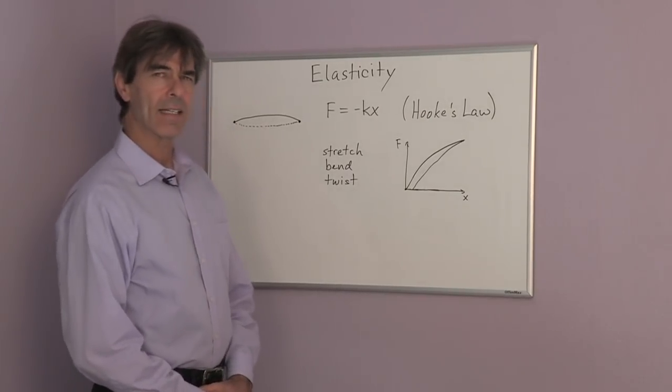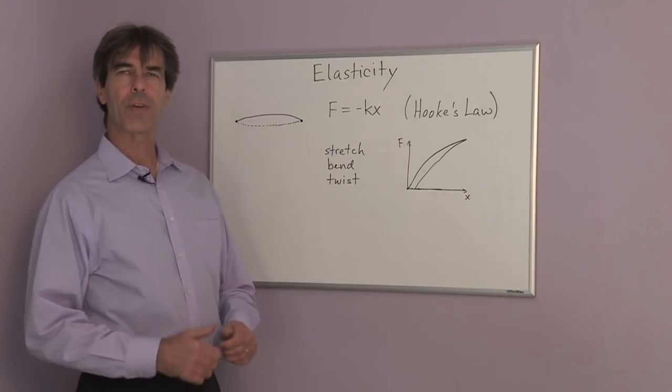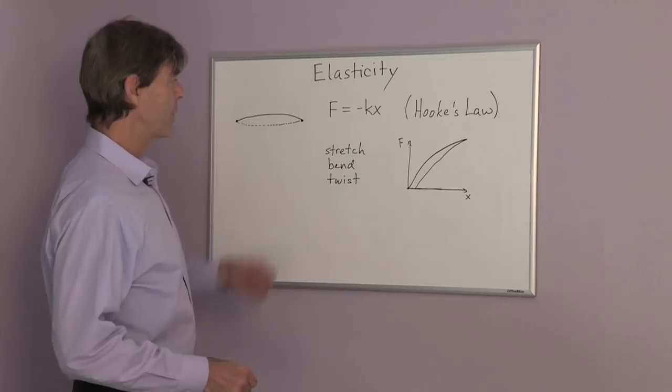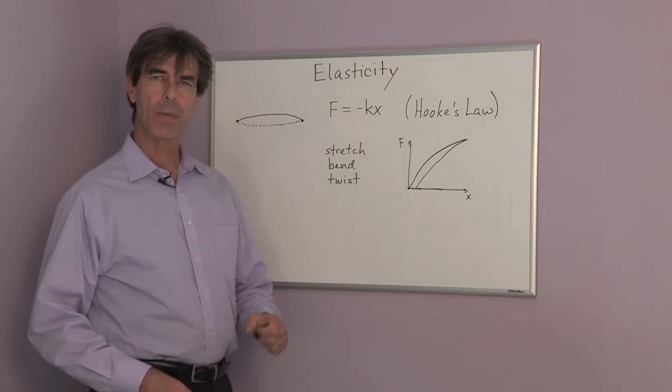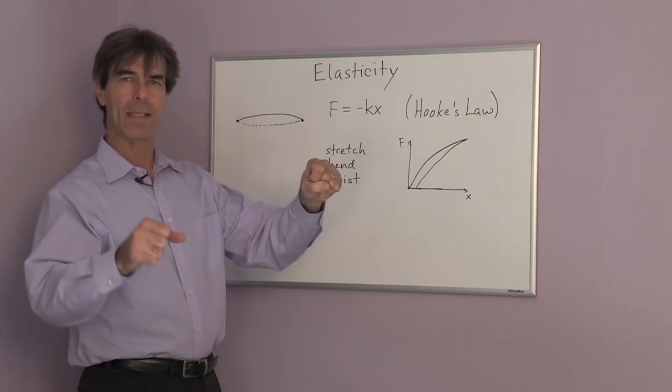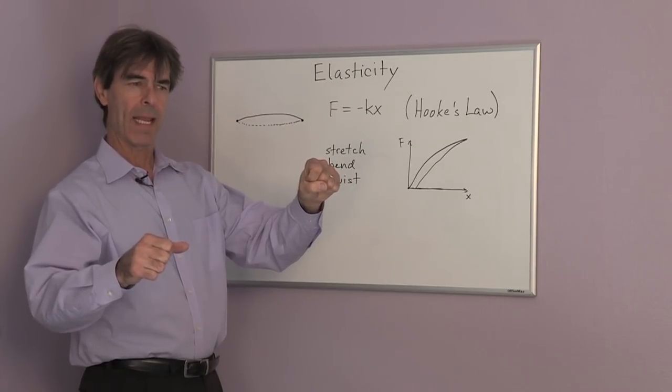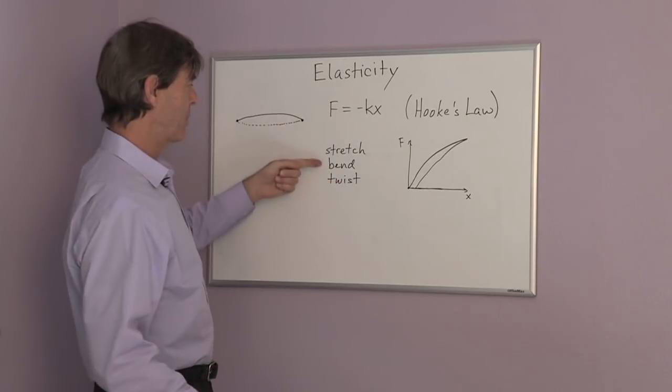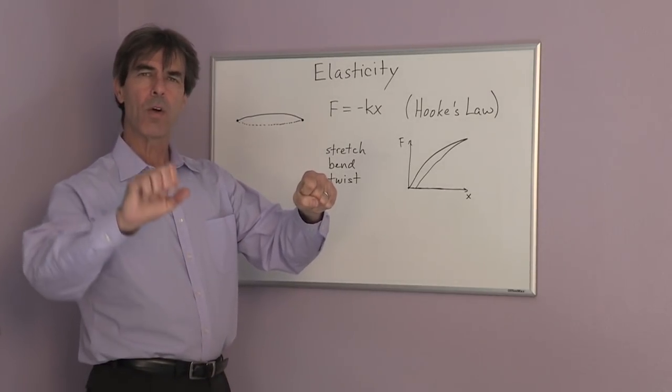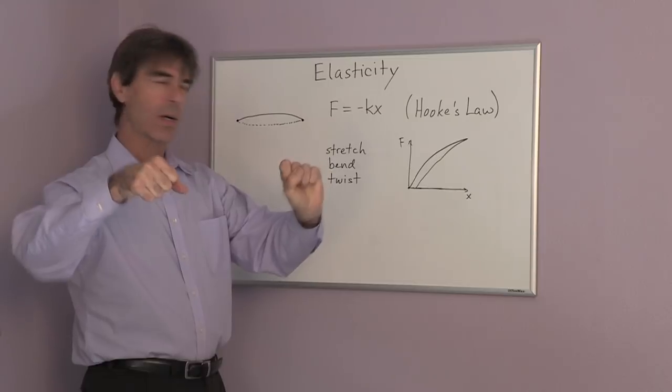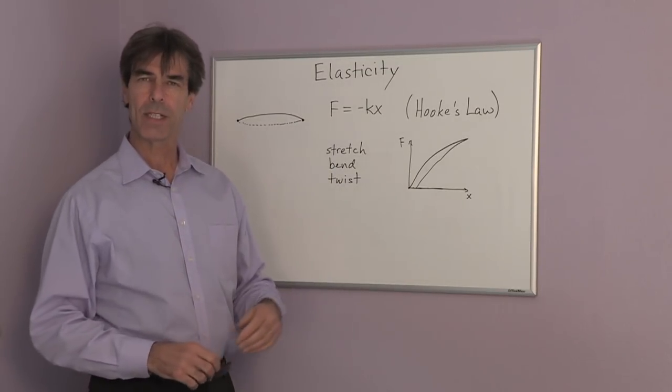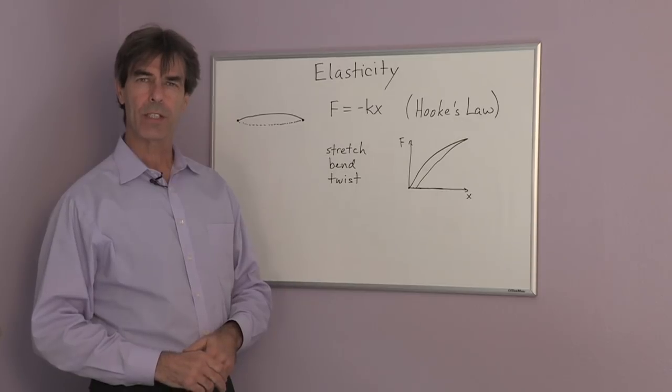So we think of elasticity in the sense of stretching a rubber band and it wants to return to its original shape, but also we could have a metal bar that we bend in one dimension and it wants to return. That's a bending deformation, or we can twist the bar and have a twisting deformation. It wants to return to its original shape.